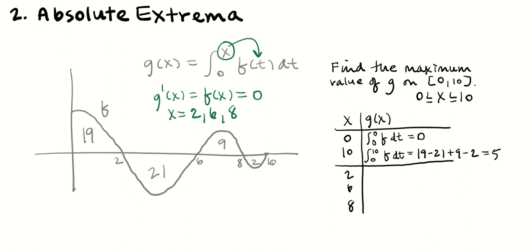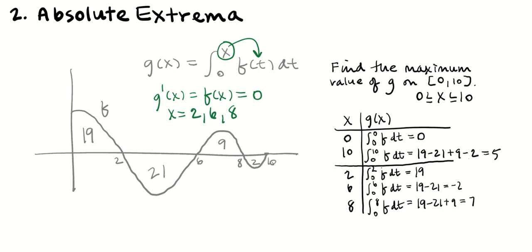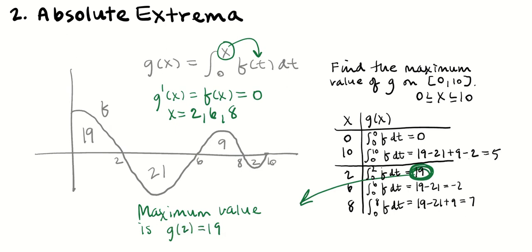At x equals 2: the integral from 0 to 2 of f(t) dt equals 19. At x equals 6: integral from 0 to 6 gives 19 minus 21, which is negative 2. At x equals 8: 19 minus 21 plus 9 equals 7. Now I can identify the largest value. The maximum value is g(2) equals 19 — or just 19. Not 'x equals 2,' and not the coordinate pair (2, 19) — readers don't like coordinate pairs.